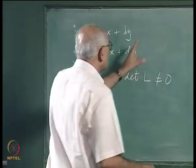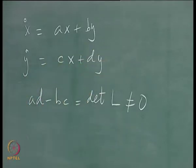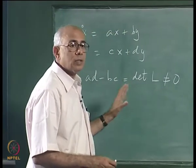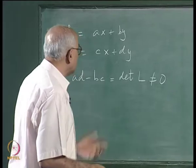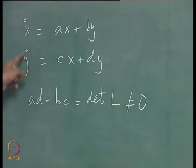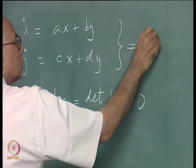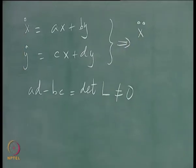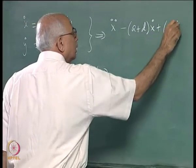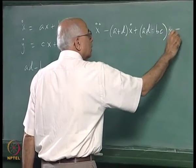L arose in a non-linear system as the Jacobian matrix at the origin of the vector field F, but right now we are focusing on the linear system per se. The general solution is a sum of exponentials. If you eliminate either x or y from the set of equations, this implies a second-order differential equation for x of the form: x-double-dot minus (a+d)x-dot plus (ad - bc) times x equals 0.